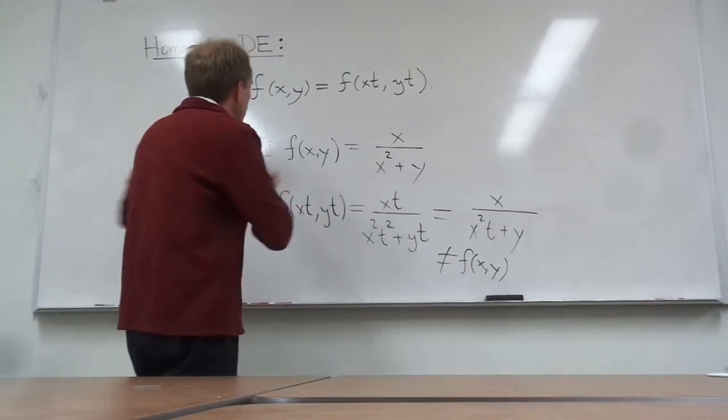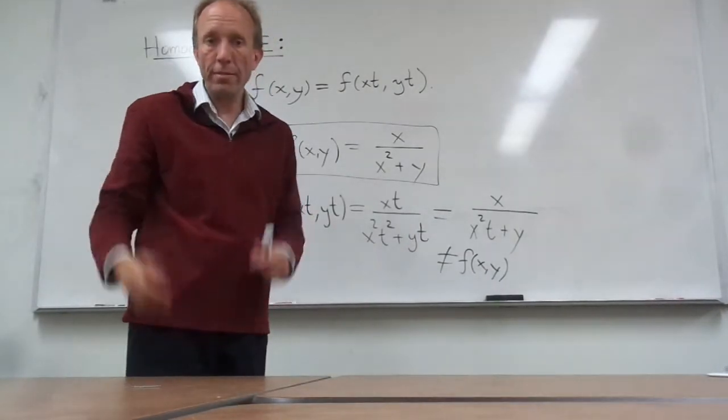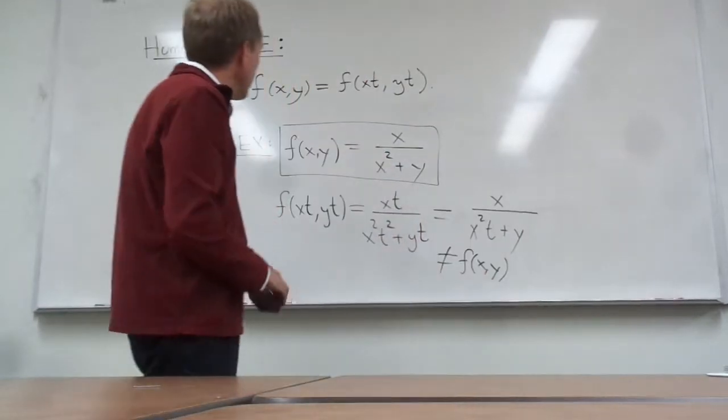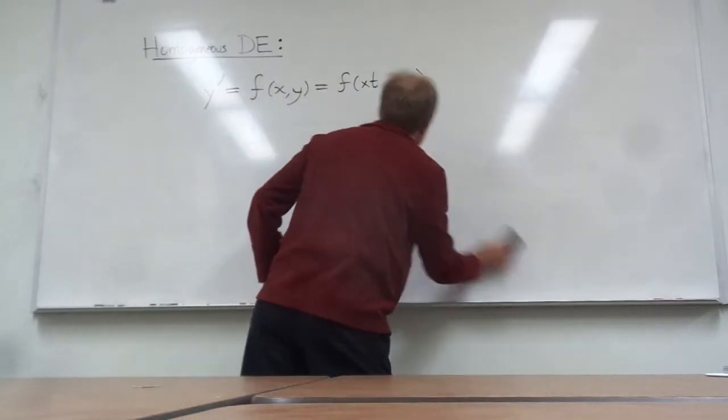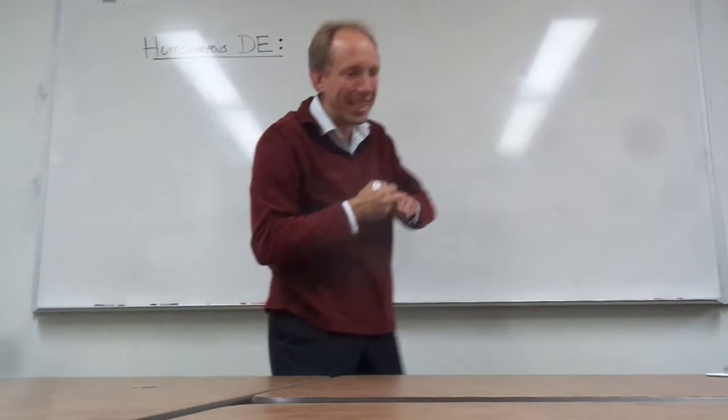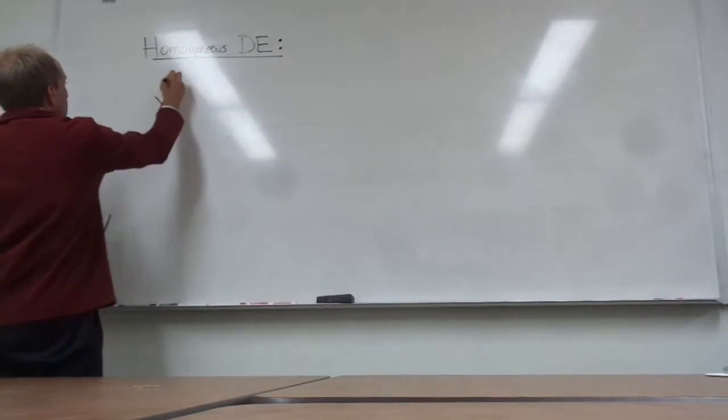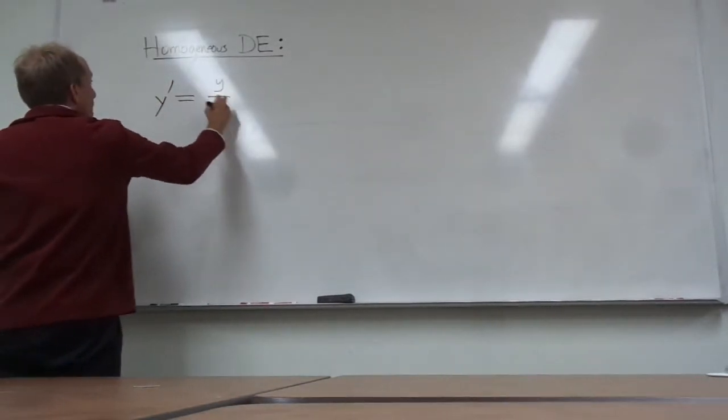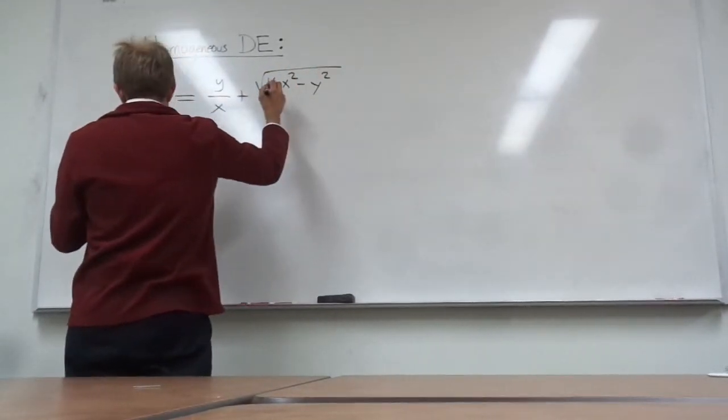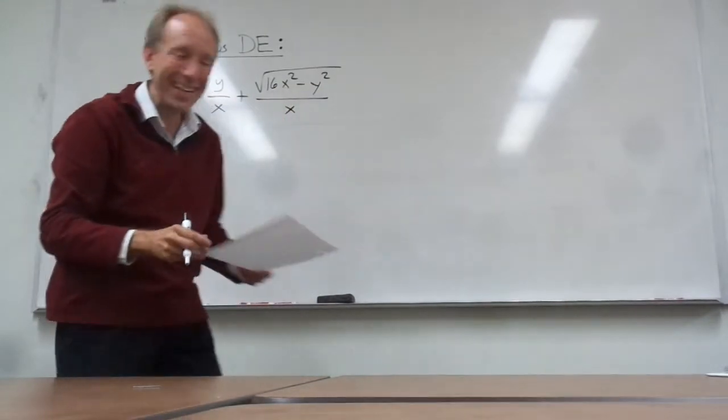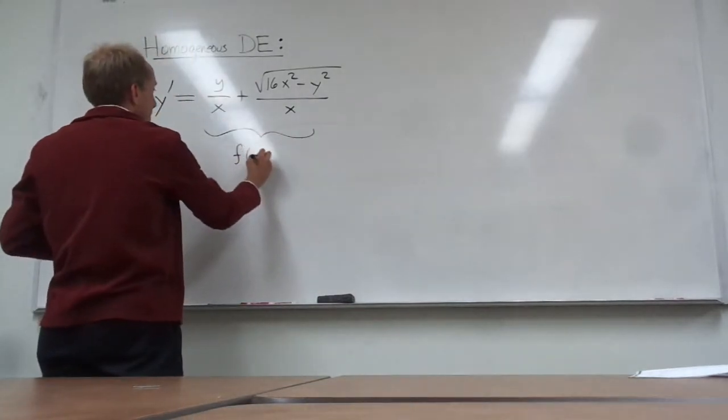So this is just a quick example of a function that you could not apply the method of change of variables to it in order to solve the problem. Let me give you another example here. And so the real question is just can you get those t's to cancel out. That's really the main question. So here's an example. Suppose that you have y prime equals y over x plus the square root of 16 x squared minus y squared all over x. Let's just take this example here. So my f of x and y is just this right-hand side.